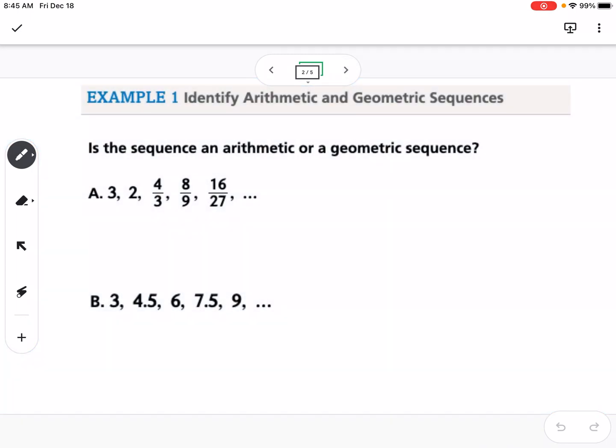The first example asks us to identify arithmetic and geometric sequences. Is the sequence an arithmetic or geometric sequence? Arithmetic means you're adding or subtracting each time by the same number, which we call d, our common difference. A geometric sequence means you're multiplying each time by a common ratio, which we call r.